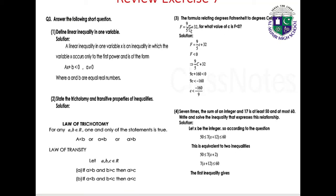Question 3: The formula relating Fahrenheit to Celsius is F equals (9/5)C plus 32. For what value of C is F less than 0? Setting (9/5)C plus 32 less than 0: 9C plus 160 less than 0, so 9C less than minus 160, giving C less than minus 160/9. Solution: C < -160/9.